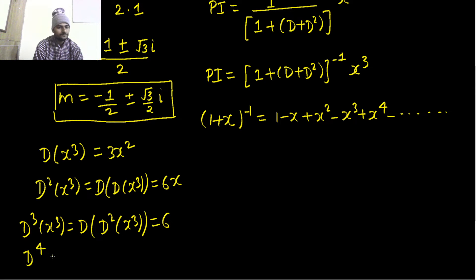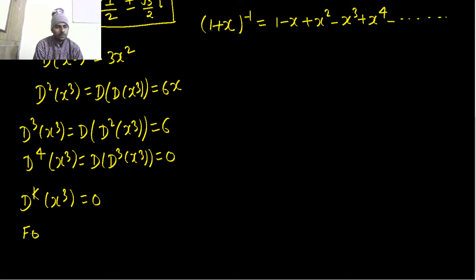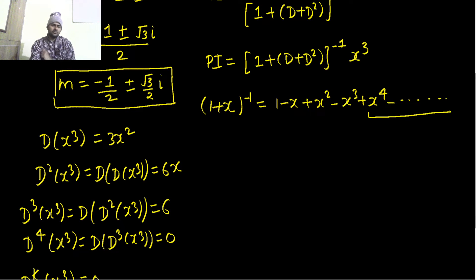Fourth derivative is going to 0, and D^k x³ equals 0 for all values of k equals 4, 5, 6 and so on. All the higher derivatives from 4th derivative onwards are going to give you 0. So from this term onwards I'm not going to separately find because I know these are going to give me 0.